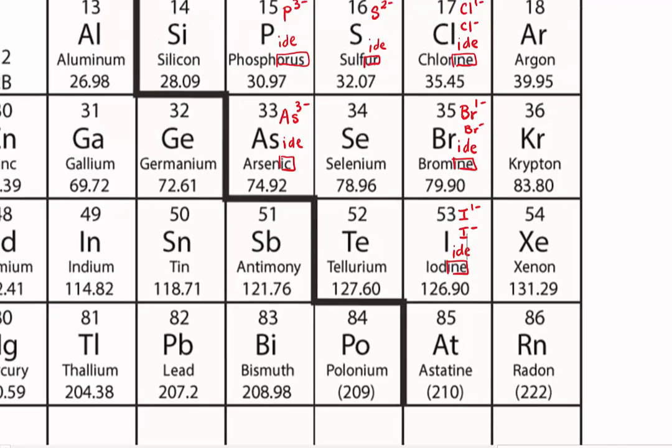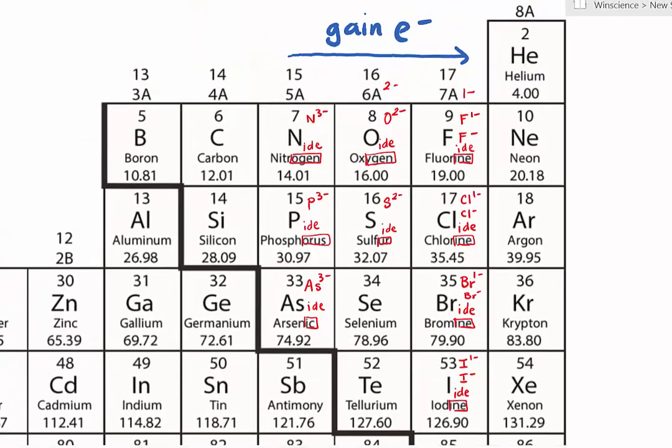What about for group 8A if we zoom out? Remember this group is the stable group. And all of the elements want to have the Lewis dot structure of the noble gas.